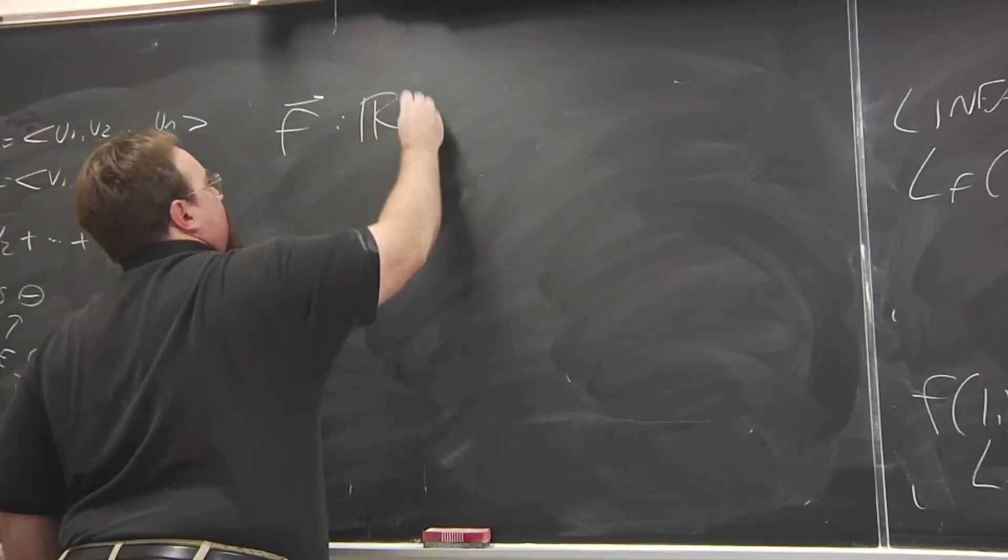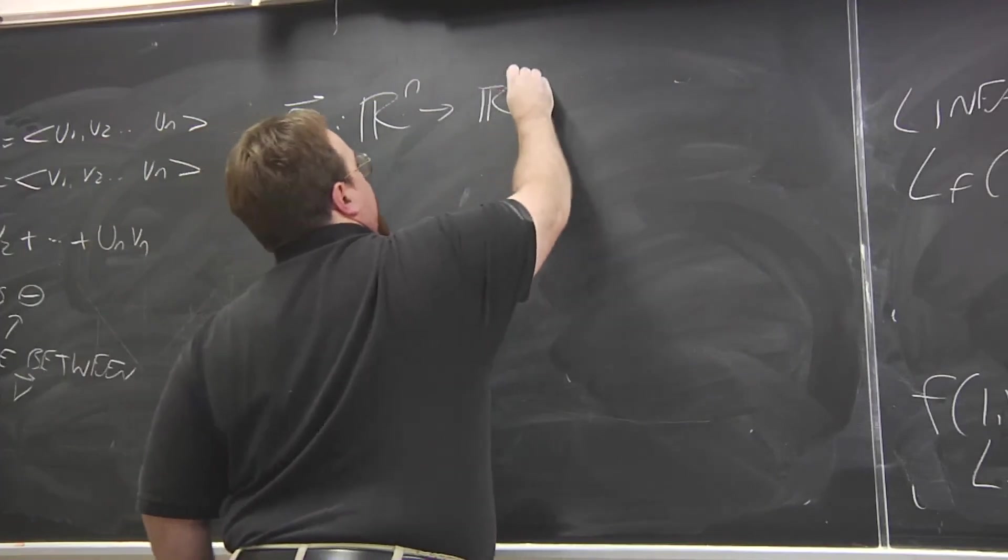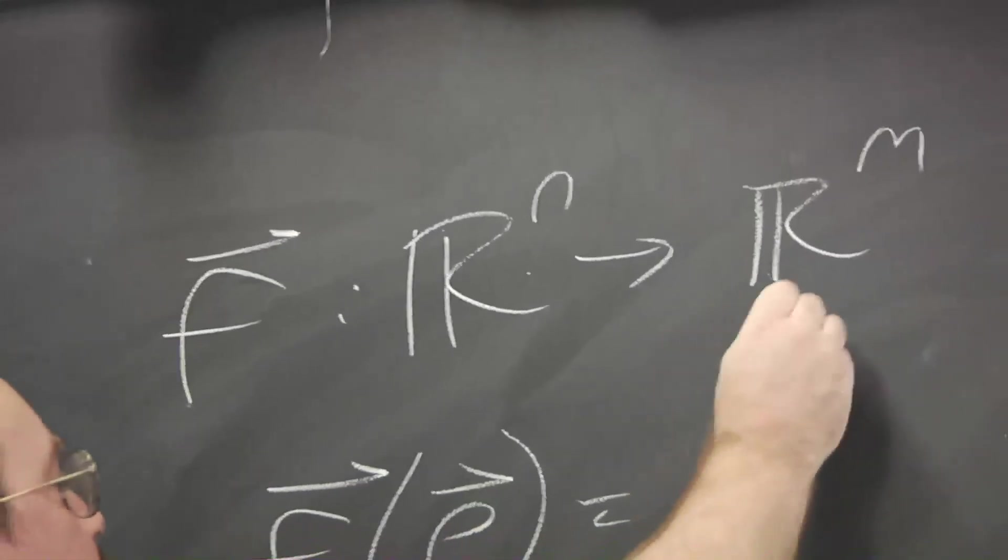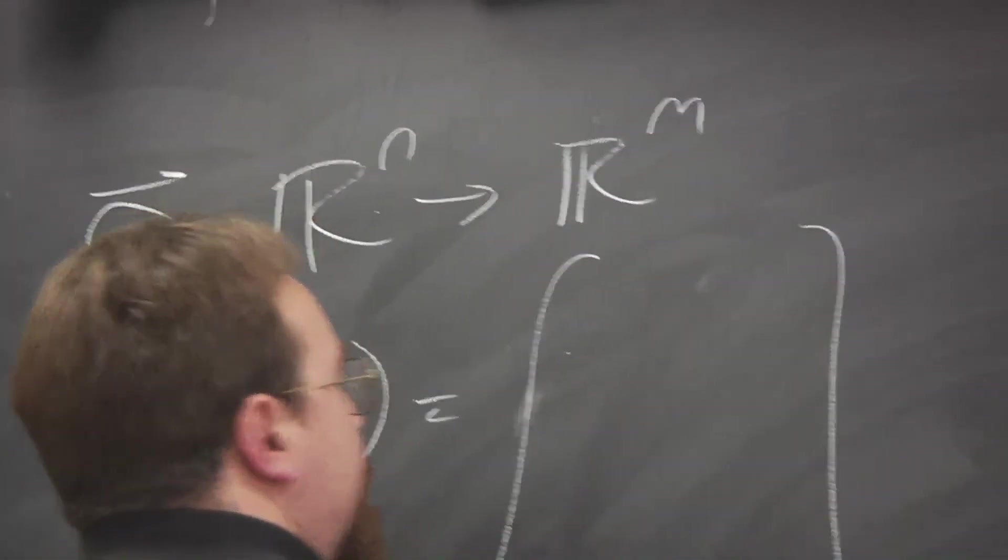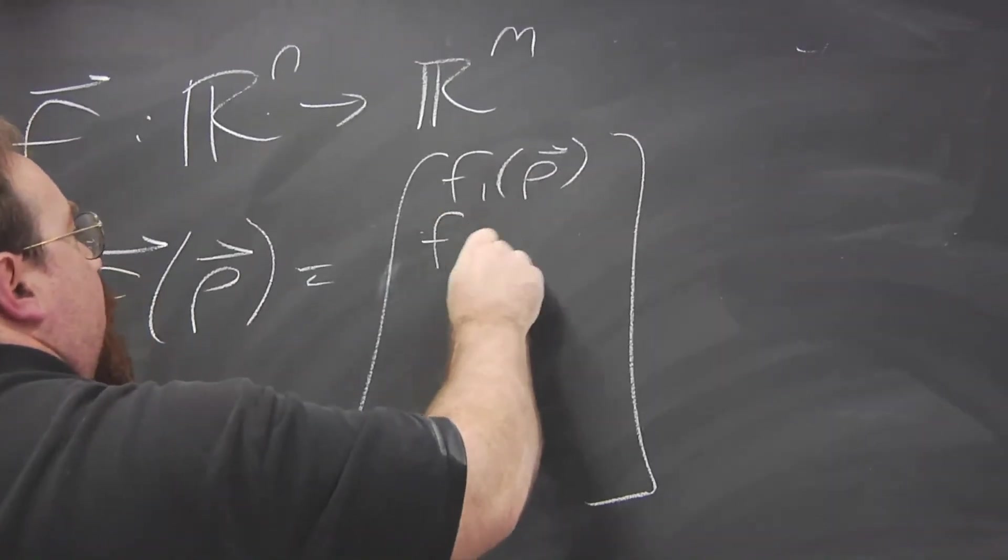Vector valued functions, this takes in n variables, but it outputs m variables. So its value is going to be, at any point, it's going to be a vector and it's going to have several component functions. It's going to have m of them.